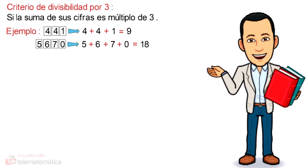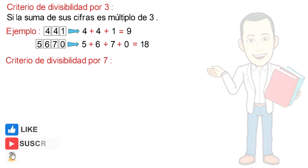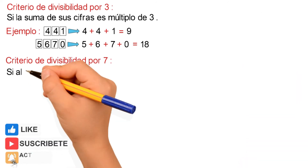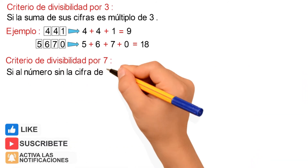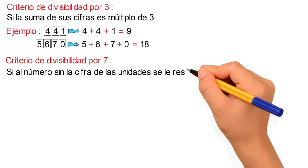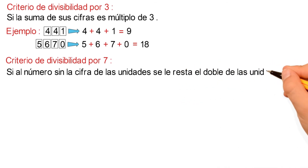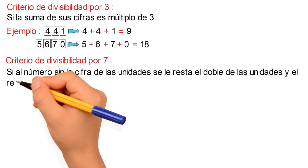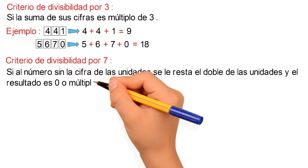En segundo lugar, el criterio de divisibilidad por 7, que se define como: un número es divisible por 7 si al número sin la cifra de las unidades se le resta el doble de las unidades y el resultado es 0 o múltiplo de 7.